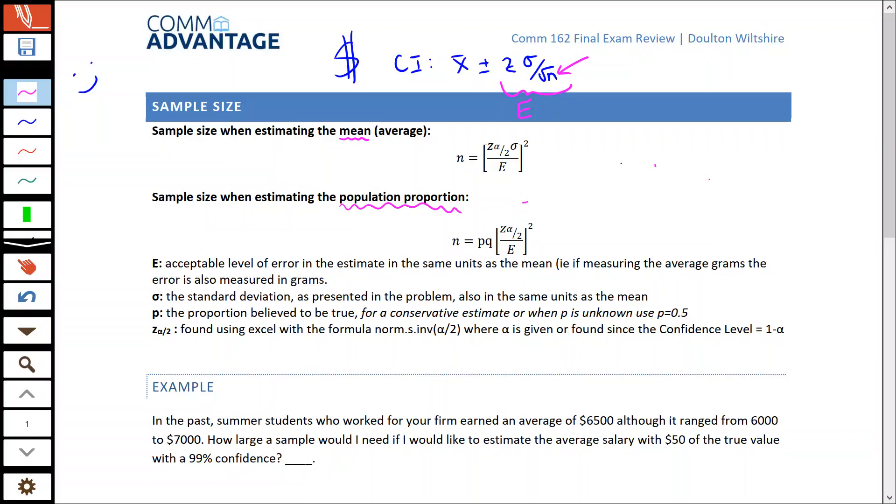In both of these formulas, we have E, error, which is the acceptable level of error in the estimate. It's in the same units as the mean. If we're measuring it in grams, it's also going to be in grams. If we're doing a proportion problem, the error is also going to be a percentage. Everything's in the same units.